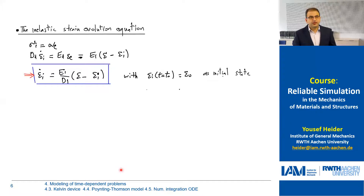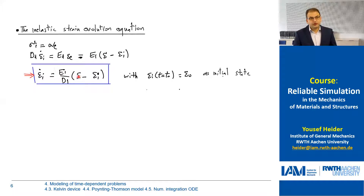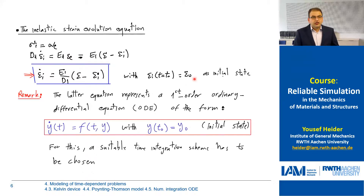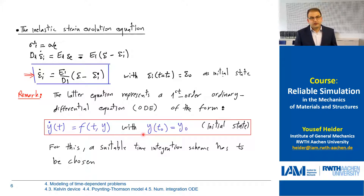The constitutive relations are: for the equilibrium branch, sigma equilibrium equals E0 multiplied by epsilon, the total strain. For the non-equilibrium branch, sigma elastic equals E1 multiplied by epsilon elastic, and sigma inelastic equals D1 multiplied by epsilon-I-dot, the rate of the inelastic strain. Since sigma elastic and sigma inelastic are equal because the spring and dashpot are in series in the non-equilibrium branch, we can derive that epsilon-inelastic-dot equals E1 divided by D1 multiplied by (epsilon minus epsilon inelastic). This is a first-order ordinary differential equation with one time derivative, and we need a suitable time integration scheme for this kind of equation.